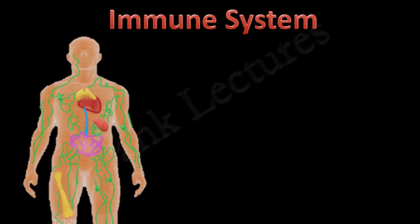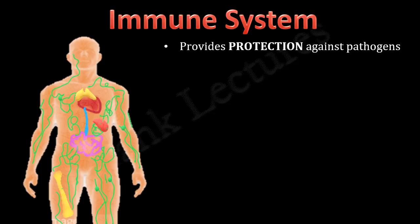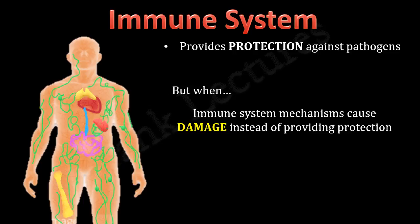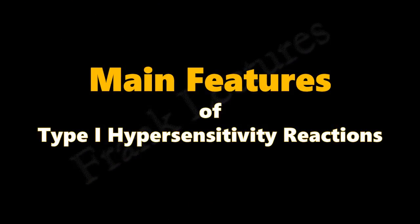In the previous video lecture, we understood that immune responses are helpful to us since they provide protection against pathogens. But when the immune system starts causing damage instead of providing protection, it leads to hypersensitivity reactions. Hypersensitivity reactions consist of inappropriate immune responses that result in damage to the host. Today we will study in detail the main features and the underlying mechanism of type 1 hypersensitivity reactions.